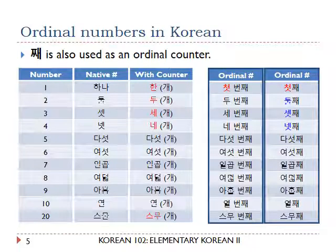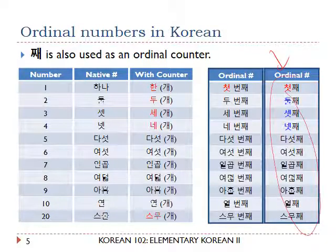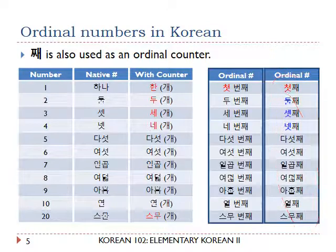Along with the counter 번째, another form is: 첫째, 둘째, 셋째, 넷째 — so first, second, third, fourth — 다섯째 (fifth), 여섯째, and so forth. Look at the table. At the last column you see the examples: 첫째, 둘째, 셋째, 넷째.